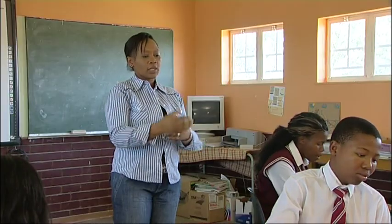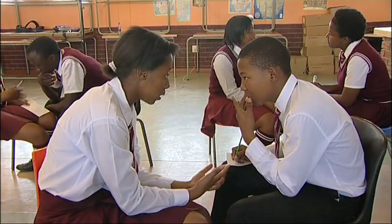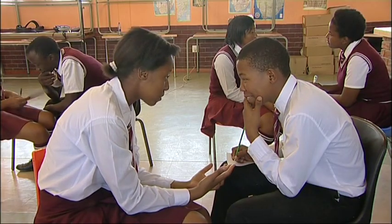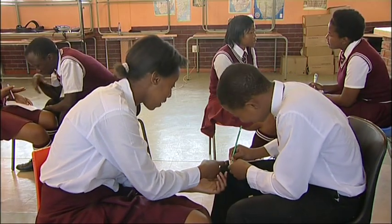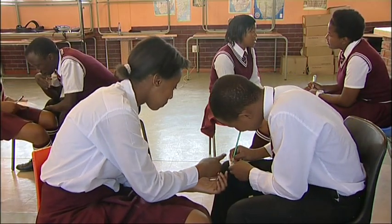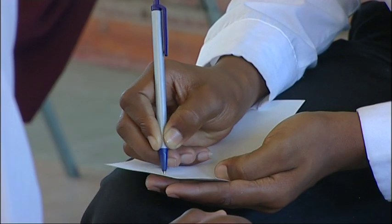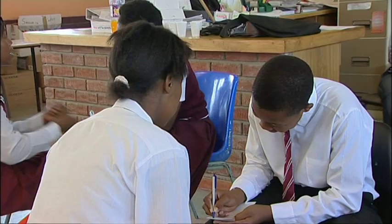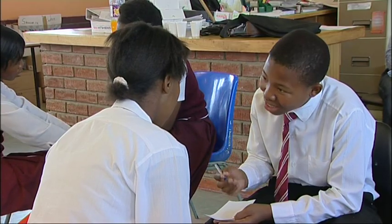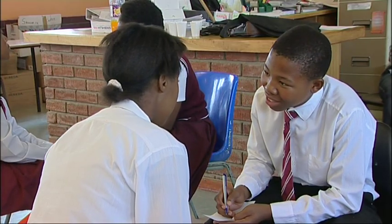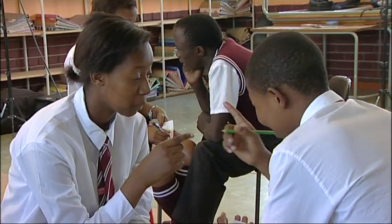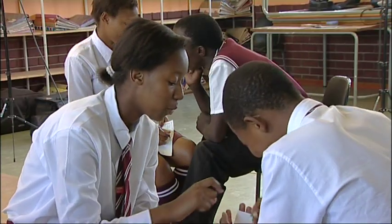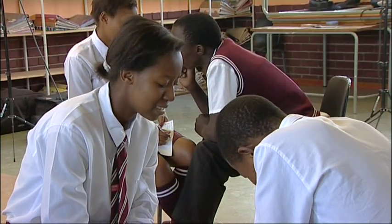When another three minutes have expired, learners proceed with a second role-play session in which they now give reasons why they think they would be a perfect entrepreneur. Exactly the same procedure is followed as in the first role-play session with regards to the swapping of roles after three-minute intervals.